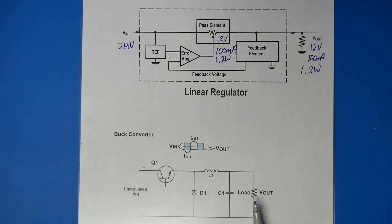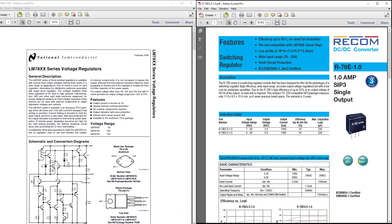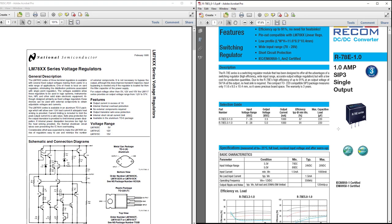With that, let's go take a look at the data sheets for the two devices. Here are the PDFs for the two circuits. You can see the 78 series on one side and the 78 E's, the pulse width modulated circuits from Recom, on the other side.